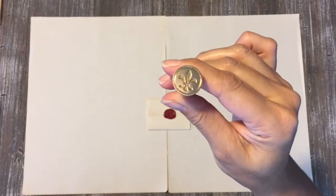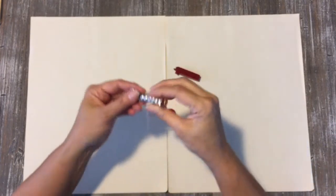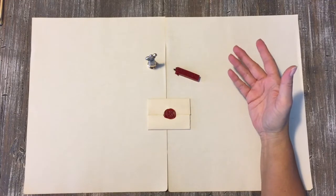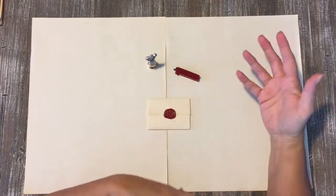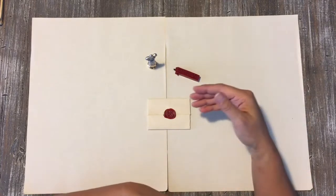That also got me start thinking, well wouldn't it be cool to do the old style, I guess Victorian or Regency style letters, and put them in the junk journal.